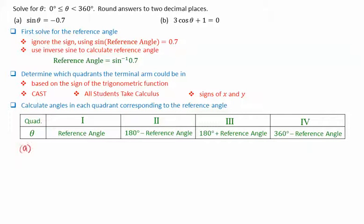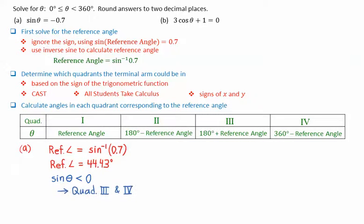So for part A, sine theta equals negative 0.7. We take our reference angle as sine inverse of 0.7. This gives a reference angle of 44.43 degrees. In this case, we know that sine of theta is less than 0, or negative. This corresponds to a terminal arm in quadrants 3 and 4.